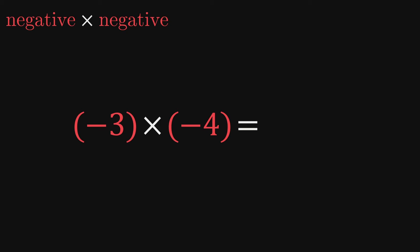We need another way to convince ourselves that multiplying two negatives must result in a positive. The key is to use the distributive property of multiplication over addition.